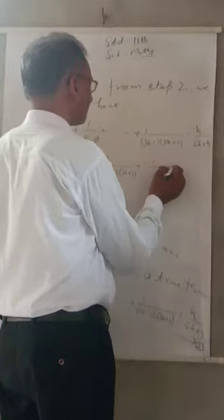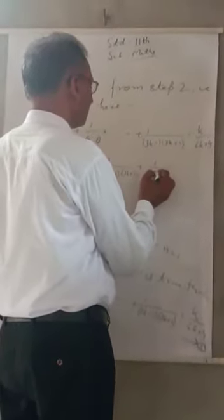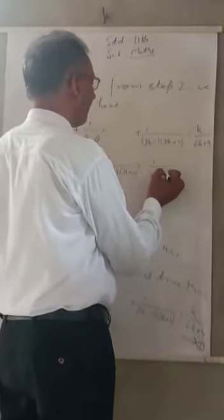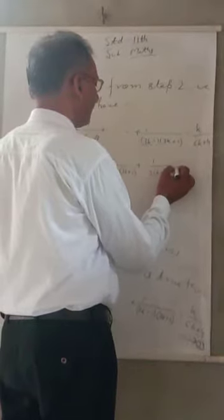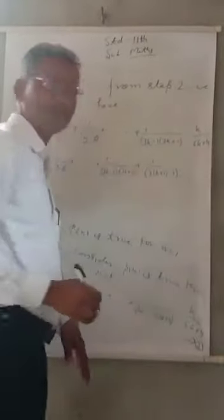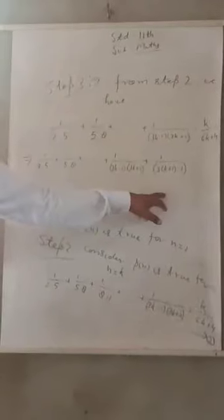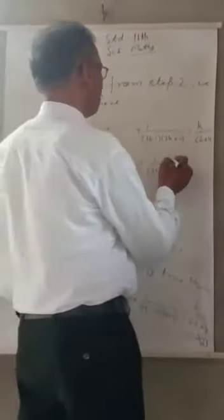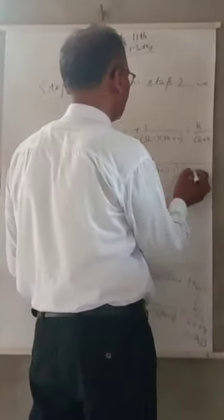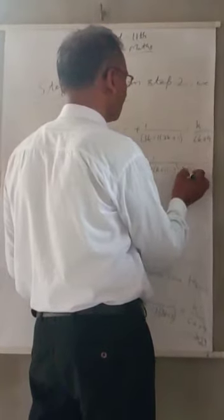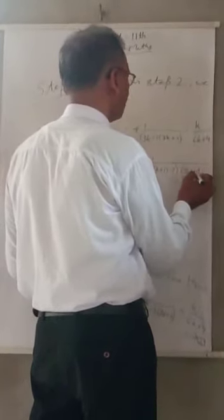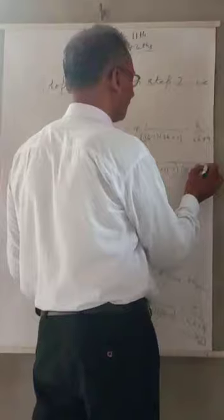1/(3(k+1)-1), where k becomes k+1. And the next term: 3(k+1)+2, which gives us (3k+2)(3k+5).